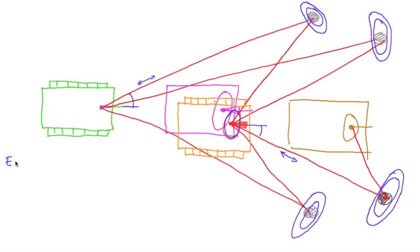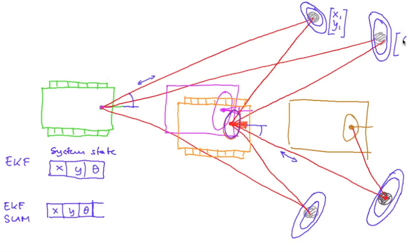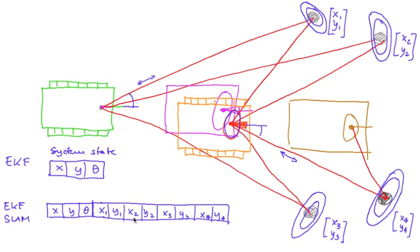Previously in our extended Kalman filter implementation, our system state included the x position, y position, and theta — the heading angle of the robot. Now, doing the SLAM version of the extended Kalman filter, we still have the robot's x, y, and theta, but we also add x and y for landmark 1, landmark 2, landmark 3, and landmark 4. So the landmark positions also become part of our state vector.